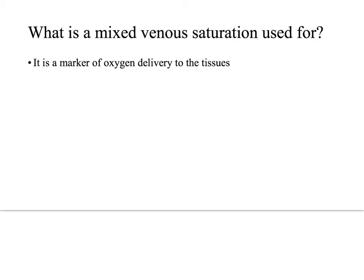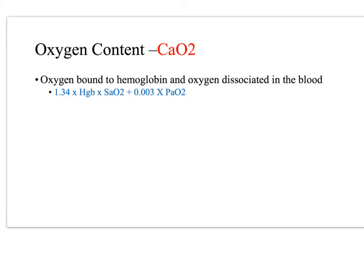A mixed venous sat is a marker of oxygen delivery to the tissues. In order to develop a clear understanding of the factors that influence the delivery and utilization of oxygen, it is necessary to understand the terms used to describe this process. The first concept is oxygen content — the oxygen bound to hemoglobin plus the oxygen that is dissolved in the blood.